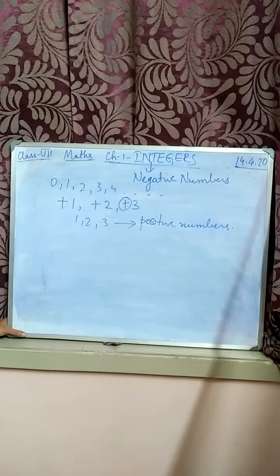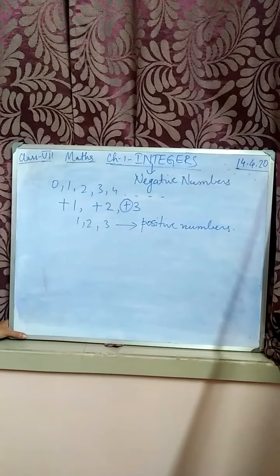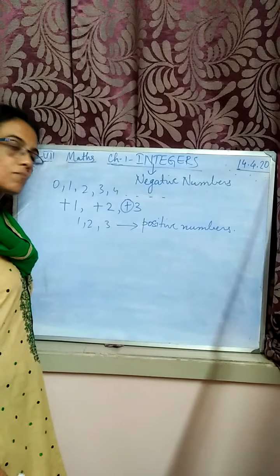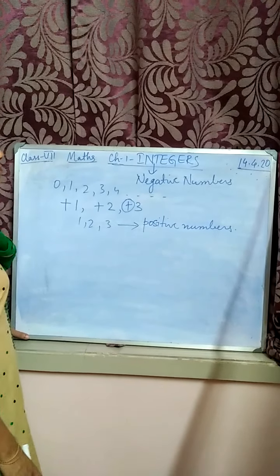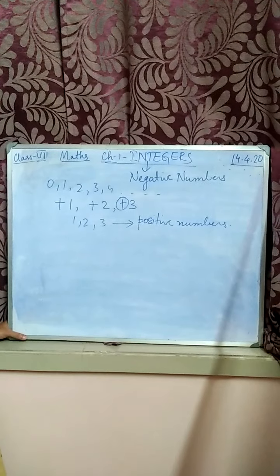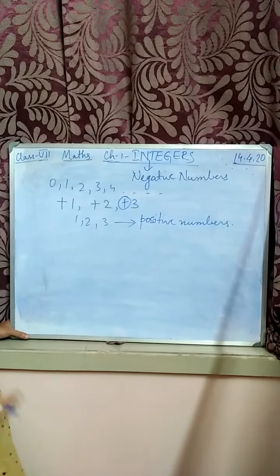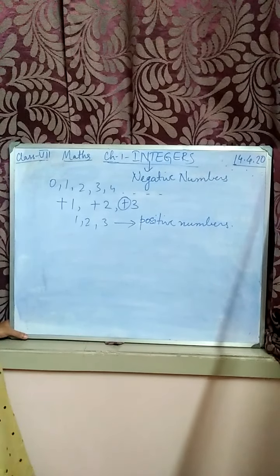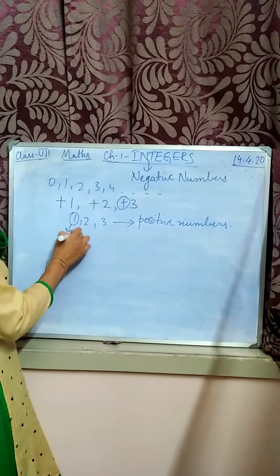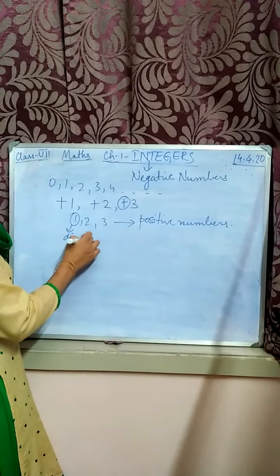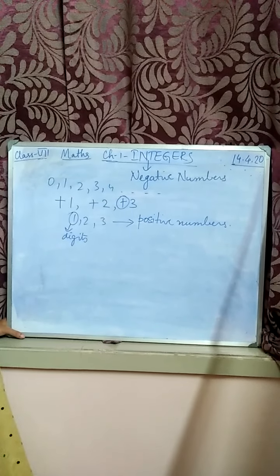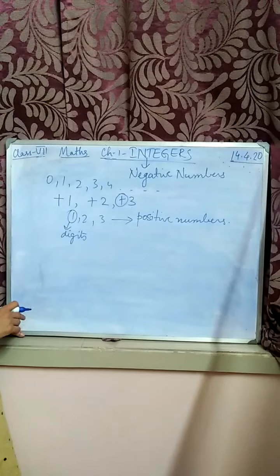As you entered school and studied starting numbers — you start from 1, 2, 3, 4 — these are natural numbers. You never put the sign plus. It is a conventional sign that 1, 2, 3, 4, whatever numbers we are dealing with, whatever digits — rather, we call them digits, not numbers. So whatever digits you are dealing with, these are nothing but positive digits.